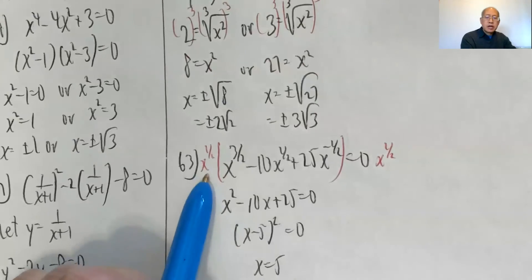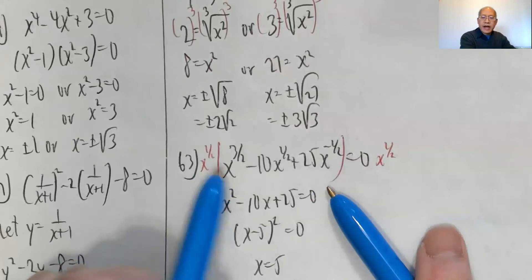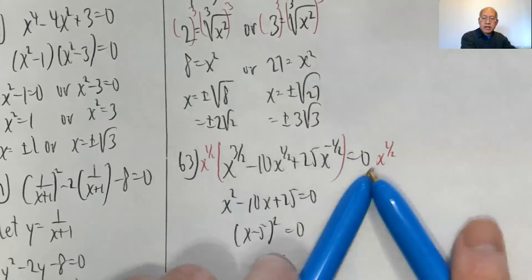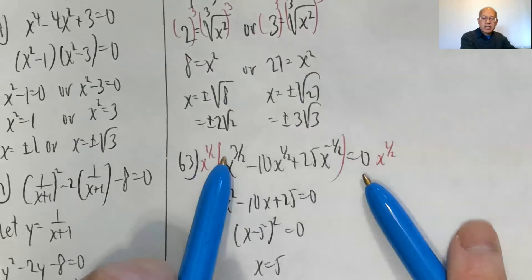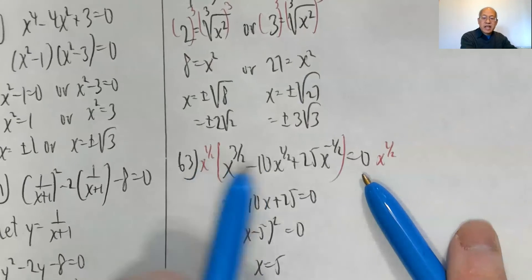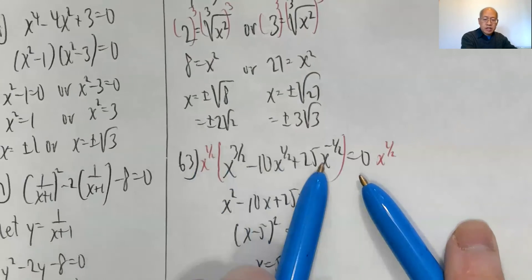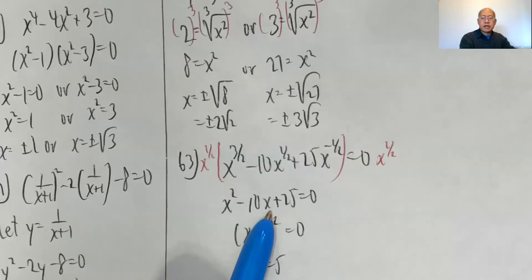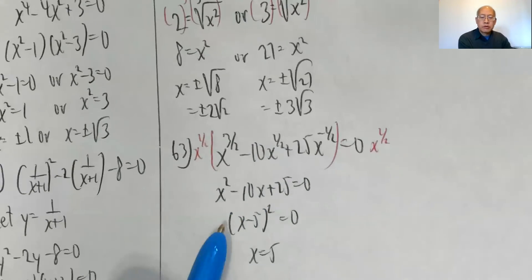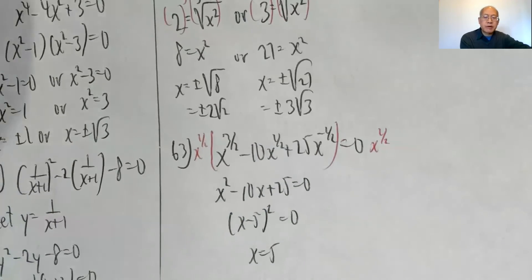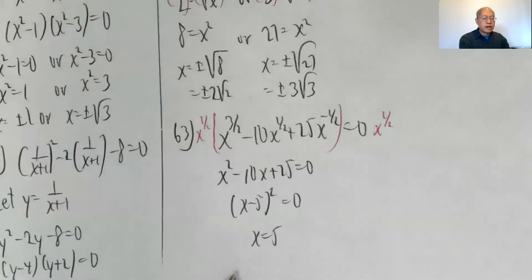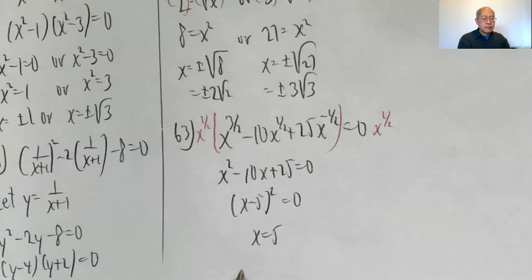Problem sixty-three: multiply both sides by x to the one half. That gives x to the four halves, which is x squared, minus ten times x to the one half times x to the one half, which is x, plus twenty-five times x to the one half times x to the negative one half, which is x to the zero, or one. So I have x squared minus ten x plus twenty-five equals zero, which factors into x minus five squared equals zero, so x equals five.